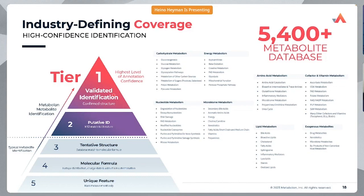The second approach is our biological pathway orientation, where each metabolite identified is immediately categorized into a super pathway and a sub pathway. This gives the chemical ontology and biological context of that specific metabolite, providing both confidence and biologically relevant information for your study and the interpretation of your data.